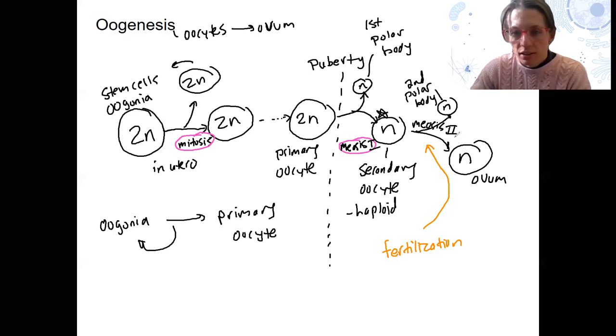So this process, the complete ovum, does not occur until fertilization, and then immediately it becomes diploid again because the two cells are combining. Pretty cool, right?